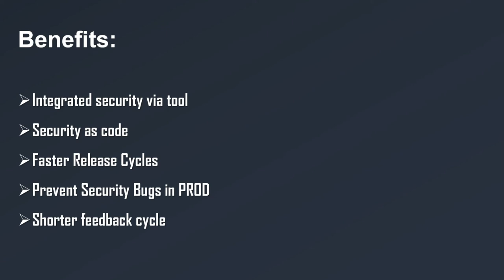Apart from speed, having security checks later in the process increases the risk of security issues sliding into production, and fixing them there is much more expensive. On the other hand, identifying and fixing them in a feature branch is much more efficient because of the short feedback cycle — right after commit and push, the developer knows the security issue they caused and can fix it faster without a context switch. Overall, the DevSecOps process makes the whole delivery process faster by reducing the feedback cycle on security issues and infusing security checks throughout the pipeline instead of having it as a weak step right before a release.